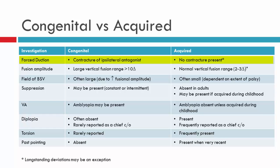If you perform forced duction testing with congenital or longstanding deviations, you may expect that the ipsilateral antagonist may have contracture, in which case you will get a positive FDT on examination. In a recently acquired deviation, you won't find this to be the case, bearing in mind that if it's acquired but longstanding, contracture will occur.